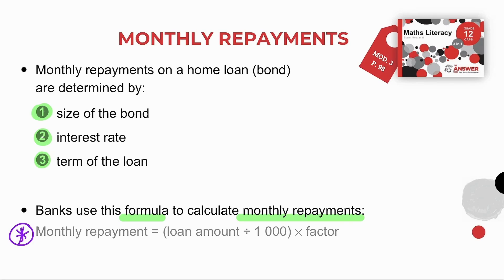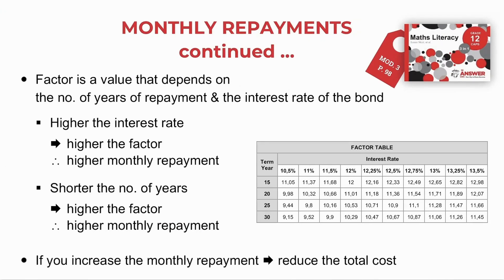What is this factor? The factor is a value that depends on the number of years of repayment and the interest rate of the bond. Looking at our factor table, the interest rate starts at 10.5% and climbs up to 13.5%. The lower the interest rate — for example, 10.5% — the factor is 11.05, and the factor increases as the interest rate increases, for example to 12.98. So the higher the interest rate, the higher the factor, and that means the higher the monthly repayment.